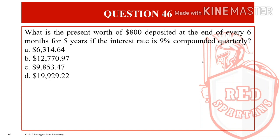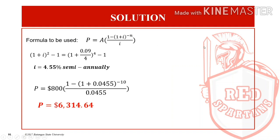For these types of problems, we first need to determine the equivalent rate of interest or the effective rate of interest that we need to use. Before we proceed, since the problem states every 6 months for 5 years and it is compounded quarterly, our formula is P = A × (1 − (1 + I)^(−N)) / I, which is the present worth for ordinary annuity. First, let us find the equivalent rate of interest.